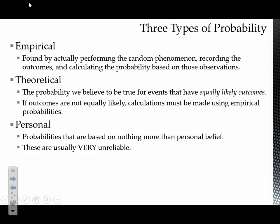The last type of probability is personal probability — probabilities based on nothing more than personal belief. For example, when I said we'll use theoretical probability 99% of the time, I have no evidence to back that up. I don't know exactly how much we'll use theoretical versus empirical, but based on what I've noticed before, I'm just making up a percentage that should be pretty close. Personal probability is made up on the spot — there's no data, no evidence, no theory to back it up, and it's usually very unreliable.